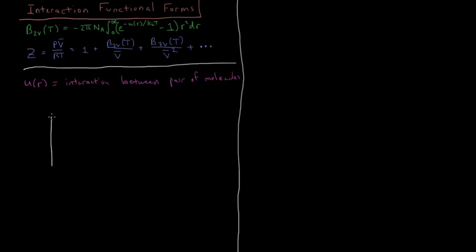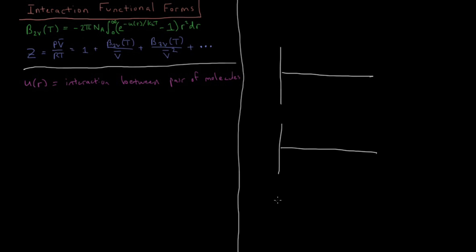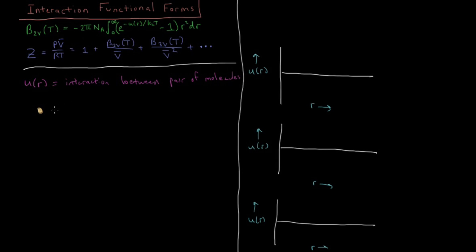So now we want to look at some of these functional forms for what these interactions are commonly modeled as. If we plot some functions here — let's plot them on the right side — we're going to look at three different functional forms, getting a little bit more complicated as we go. We have our U(R) function on the Y axis as a function of R on the X axis, R being the distance between any pair of gas molecules or atoms.